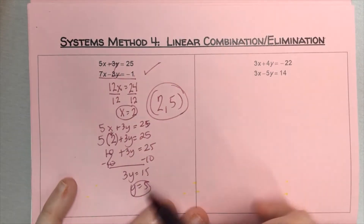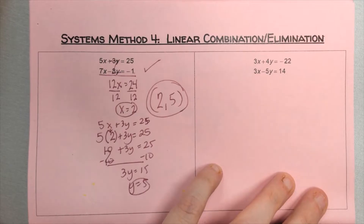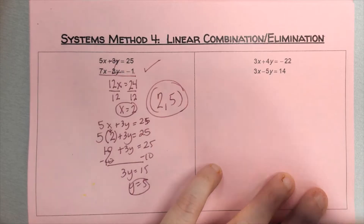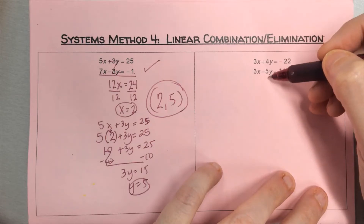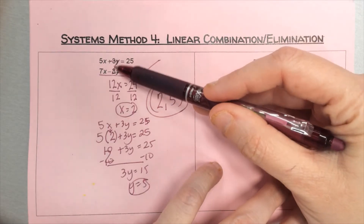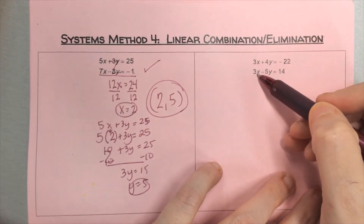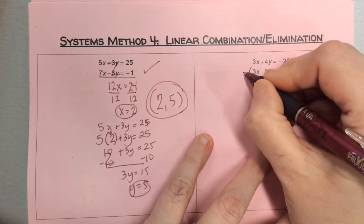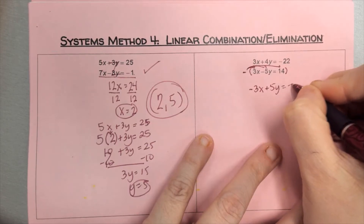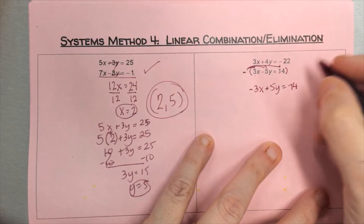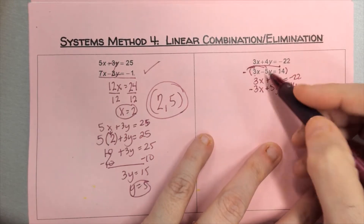This next one is different — there's no zero pair ready. I see opposites, but 4 and negative 4 aren't opposite pairs with negative 5. To create a zero pair, I can multiply everything in one equation by negative one, giving negative 3x plus 5y equals negative 14, and rewrite the second equation as 3x plus 4y equals negative 22.